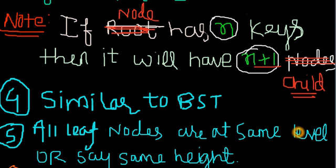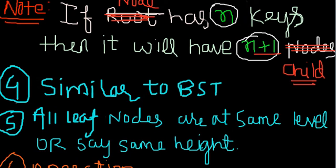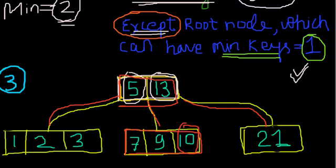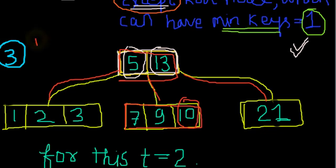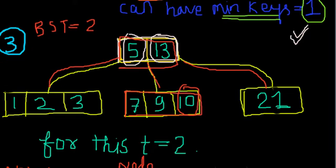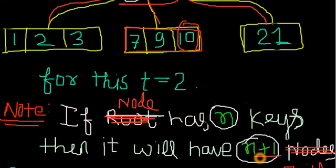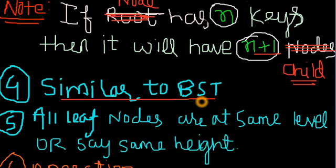Fourth property: it is similar to BST, Binary Search Tree. The difference is binary search tree can have maximum 2 children, but here it can have any number of children as long as it doesn't violate the property of B-trees. If you put 5, 6, 7 children, it's not possible because it will violate this rule - n keys means only n plus 1 children.